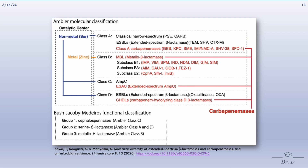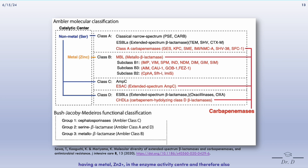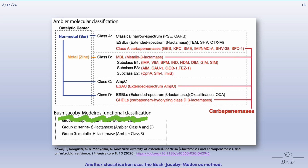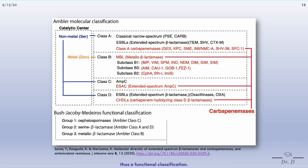Beta-lactamases of classes A, C, and D use serine as an enzyme active center and are therefore also referred to as SBLs, or serine beta-lactamases. Class B beta-lactamases are characterized by having a metal zinc in the enzyme activity center and are therefore also referred to as MBLs, or metallo-beta-lactamases. This class also has subclasses and hydrolyzes carbapenems. Another classification uses the Bush-Jacoby-Medeiros method, where beta-lactamases are classified into groups 1 to 3 depending on the degradation of beta-lactam substrates and the effect of the inhibitor — a functional classification.